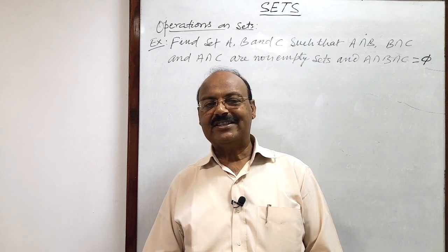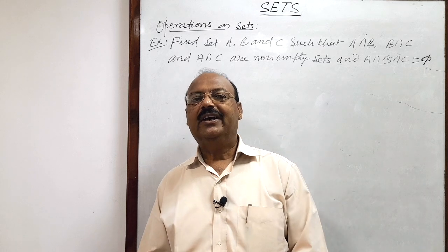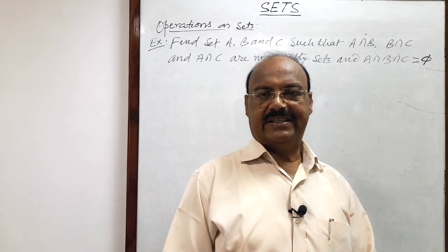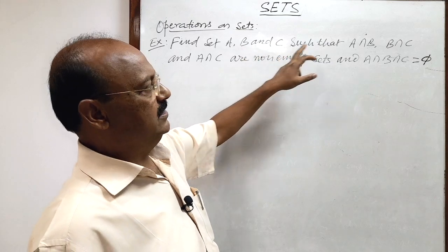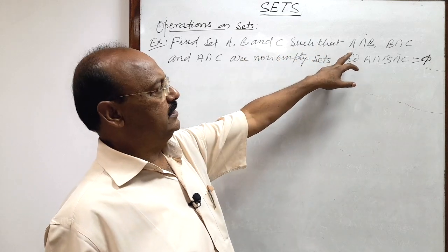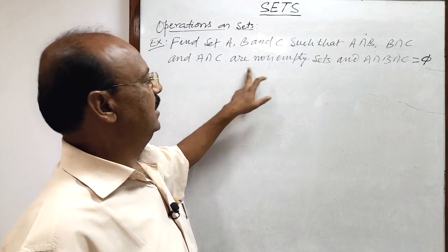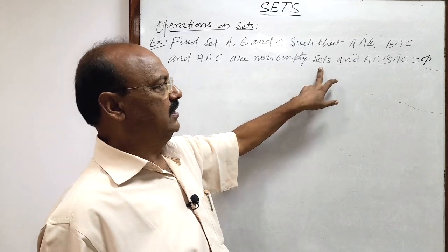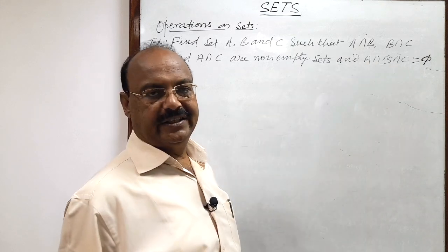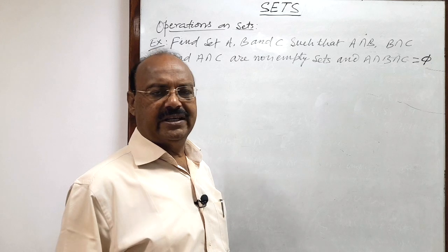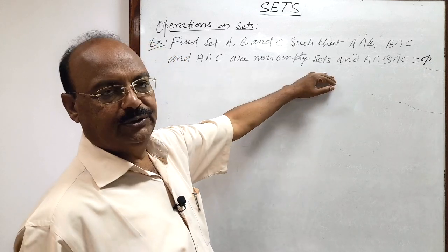Welcome students. Let us see a very interesting question from the chapter sets. The question is based on the topic operations on sets. The question is: find sets A, B, and C such that A∩B, B∩C, and A∩C are non-empty sets, and A∩B∩C is a null set. Let us take suitable examples to solve this question.